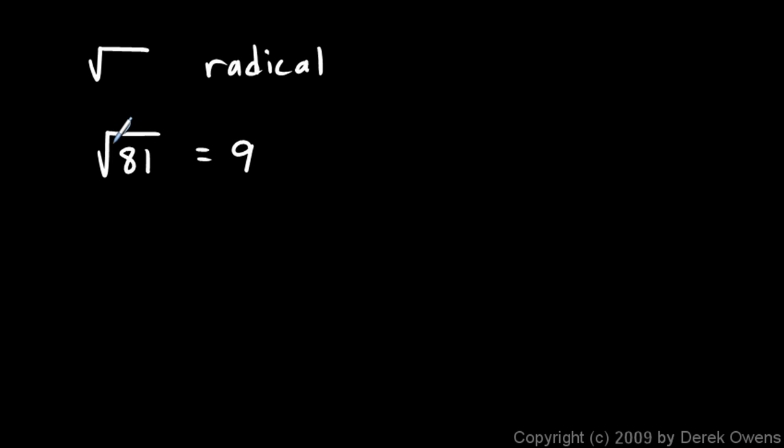Now we know the number 81 has two square roots. If we want to refer to both of them, then we could say plus or minus the square root of 81. And that would be plus or minus 9. So just remember that that symbol typically refers to the positive square root.